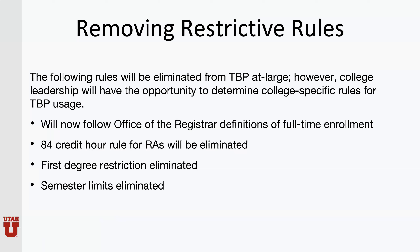We will also be removing restrictive rules. From now on, we will be following the Office of the Registrar definition of full-time enrollment. This means that if your student is in thesis or dissertation — catalog range 6970 to 6989 and 7970 to 7989 — three credits will be considered full-time. They will only need to enroll in three dissertation credits to be eligible for tuition benefit. For those eligible and participating in the subsidized health insurance program, three credits of dissertation will be considered full-time and qualify them for the health insurance plan.